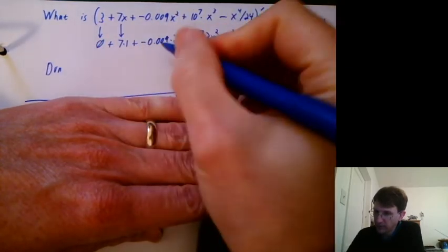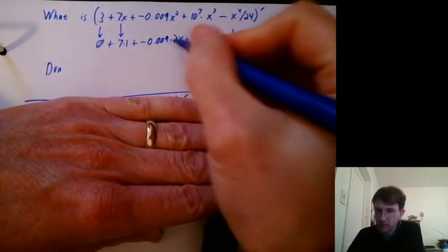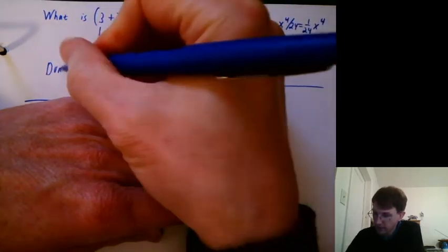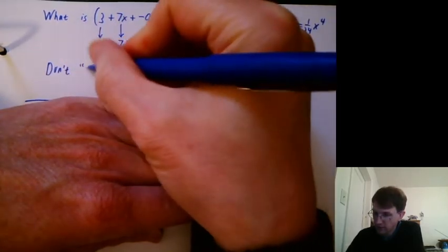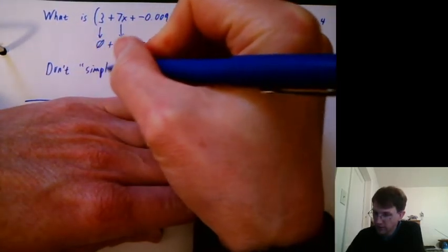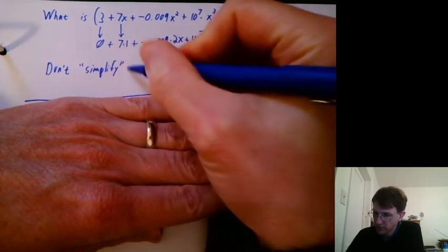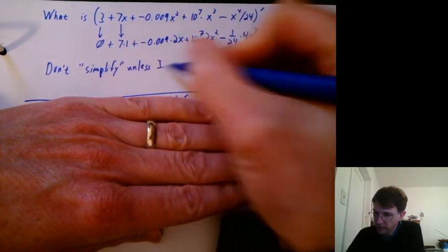I think this is simple enough. If you type this into a computer, it will do the multiplying for you behind the scenes. And then we're all happy. So I'd say don't simplify unless I say it's worthwhile.